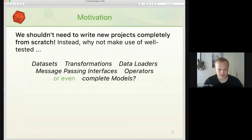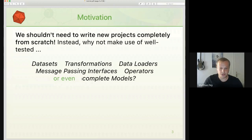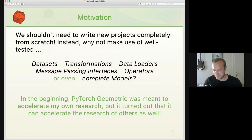My personal motivation for PyTorch Geometric was that I didn't want to write new projects completely from scratch — you often see GitHub repositories where research projects are built entirely from scratch. Instead, we can directly make use of well-tested functionalities such as loading benchmark datasets, applying graph transformations, mini-batching data, building new message passing layers with a unified interface, and using existing operators or complete models. PyTorch Geometric began as a way to accelerate my own research, but it turned out it can accelerate the research of others as well.